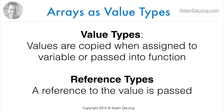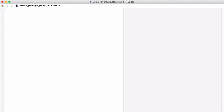With value types, when they are assigned to a variable or constant, or passed into a function, their values are copied into those variables, constants, or functions. Whereas reference types pass in a reference to the variable, constant, or function. The difference between using var and let with reference types becomes important when we use things like properties.